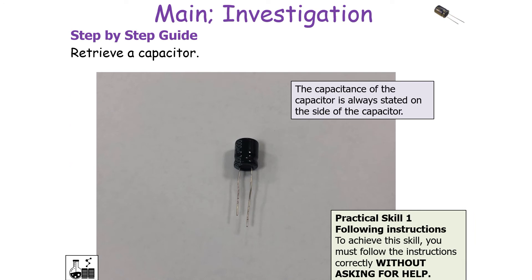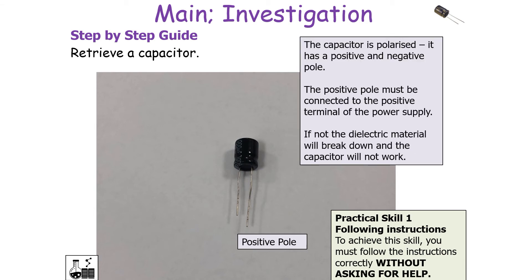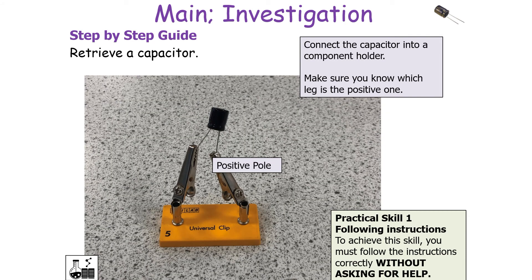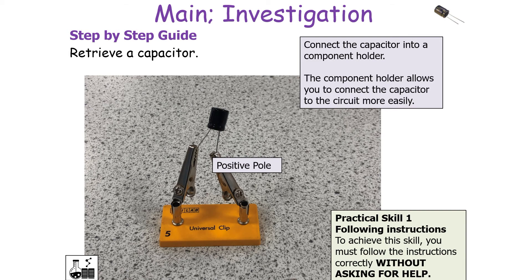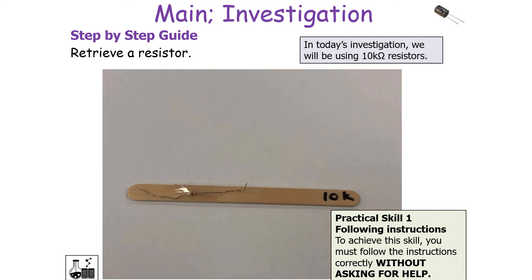To carry out this investigation, retrieve a capacitor — the capacitance is always stated on the side. A capacitor is polarised with a positive and a negative pole, where the positive pole has a longer leg. The positive pole must be connected to the positive terminal of the power supply; if not, the dielectric material between the plates will break down and the capacitor will not work. Connect the capacitor into a component holder, making sure you know which leg is positive. For the resistor, its resistance can be determined from the banding on the side — in today's investigation we'll use a 10 kΩ resistor.